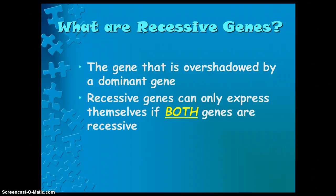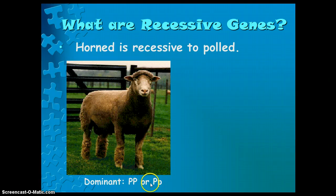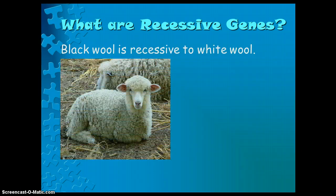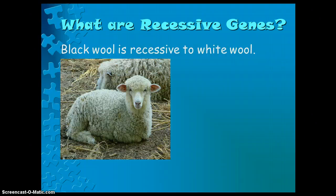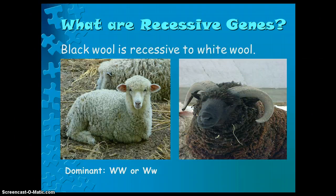Recessive genes can only be expressed if both genes are recessive. For example, horned is recessive to polled, so the dominant polled genotype is big P, big P or big P, little P, while recessive horned is little P, little P only. Similarly, black wool is recessive to white wool — white wool gives us big W, big W or big W, little W, while black wool, being recessive, has only the option of little W, little W.